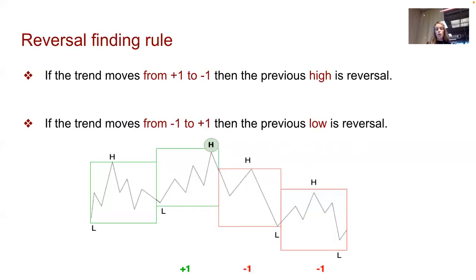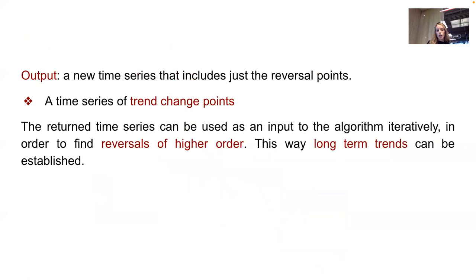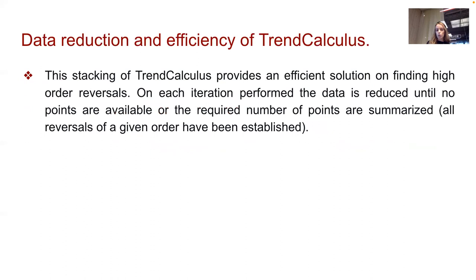A reversal point is a point on the previous window when the trend values flip. To find the reversal: if the trend moves from +1 to -1 (rising to falling), then the previous high is the reversal; for the other direction, the previous low is the reversal. The output of one iteration of the trend calculus algorithm is a new time series containing just the reversal points — a time series of trend change points. This output can be used iteratively as input to find higher-order reversals.